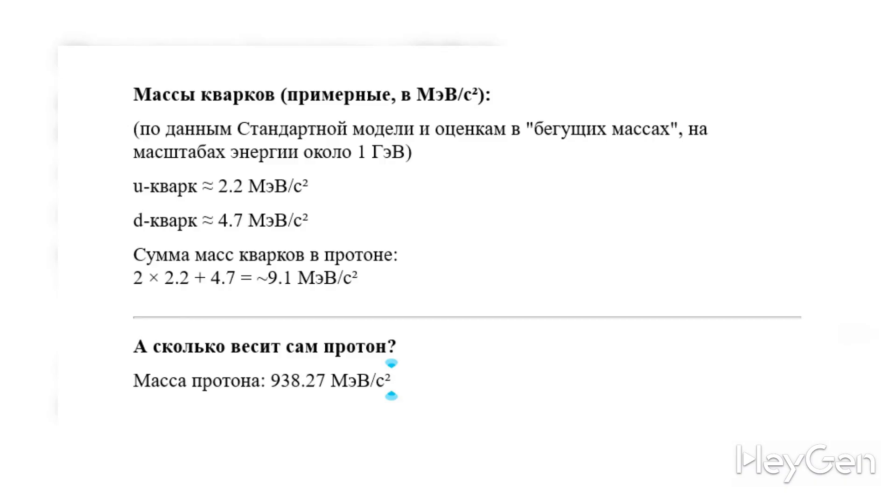How can that be? Well, at the very least, this confirms the ideas we outlined a bit earlier — that inside the proton, there are not only quarks, but something else as well. Moreover, the mass of the quarks makes up only 1% of the total mass of the proton.